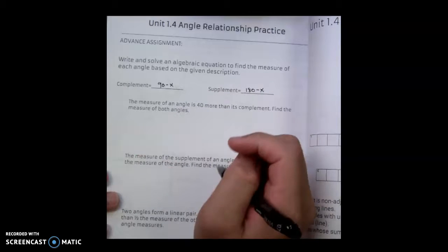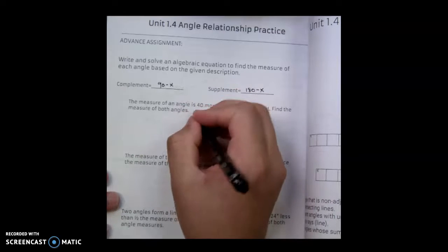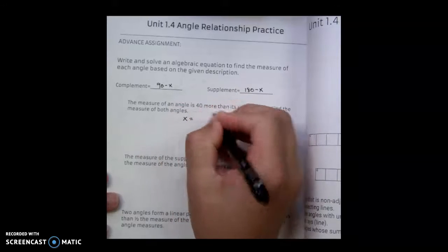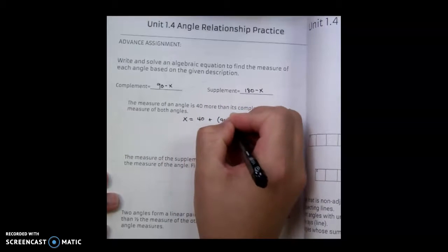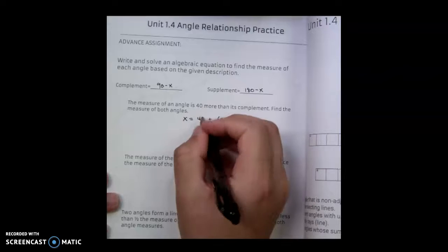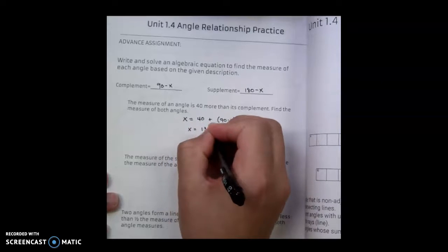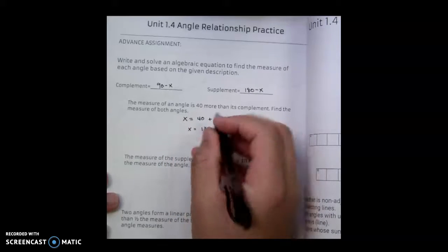So it says the measure of an angle is 40 more than its complement. Therefore, an angle is going to be x equals 40 plus its complement, or 90 minus x. We then go in and combine like terms. I get x equals 130 minus x, because 40 and 90 are like terms.